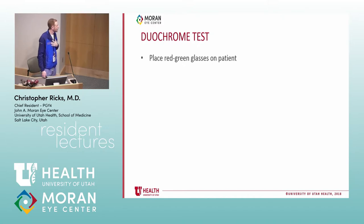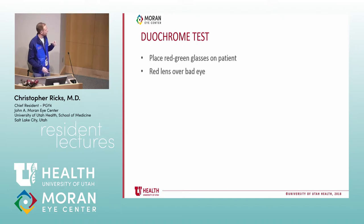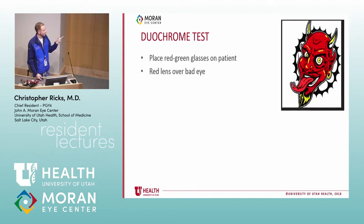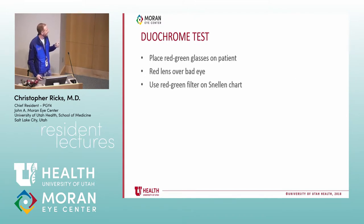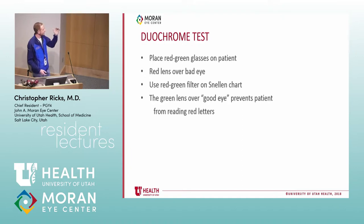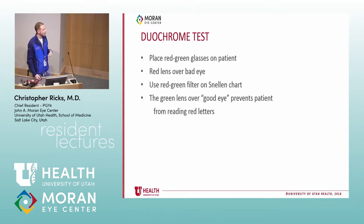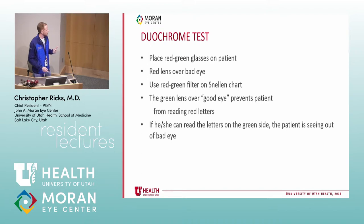The duochrome test: get the red-green glasses used for the worth four-dot test. Put the red lens over the bad eye — red is bad, helps you remember. Put the red-green filter on the Snellen chart. The green lens is over the good eye — GG (green = good) helps keep it straight. The filter prevents the patient from reading the red letters through the green side. If they can read the letters on the green side, the patient is seeing out of the bad eye, because that's the red-covered eye.